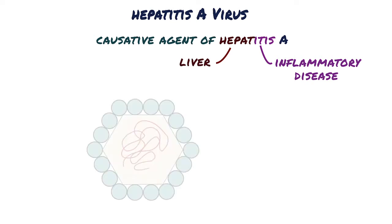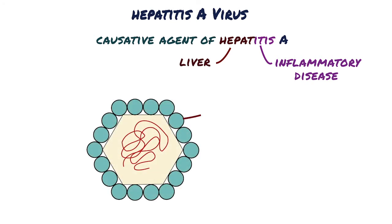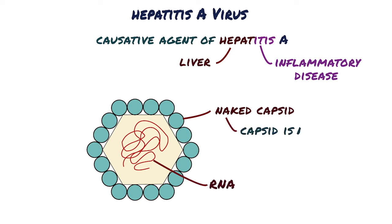Hepatitis A virus has a naked icosahedral capsid surrounding a single-stranded RNA genome. It is naked because the capsid is uncovered by a lipid membrane.